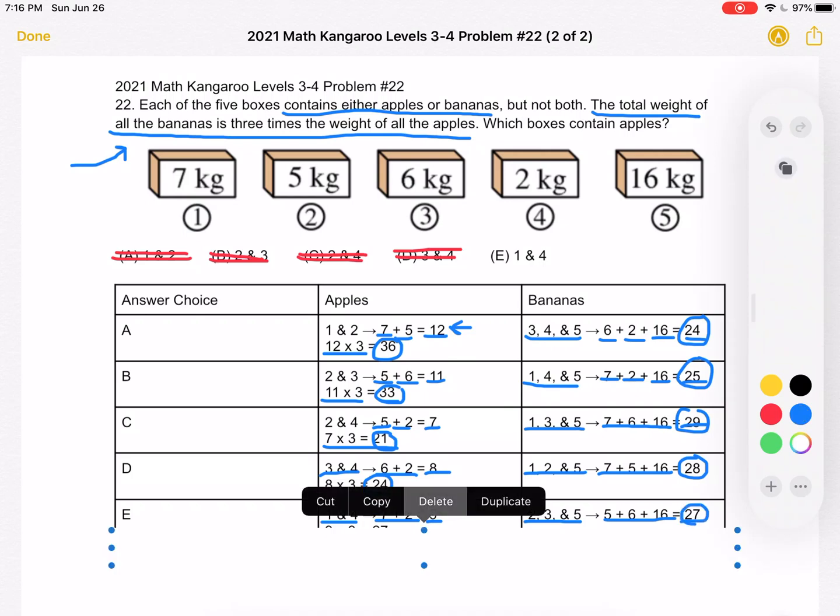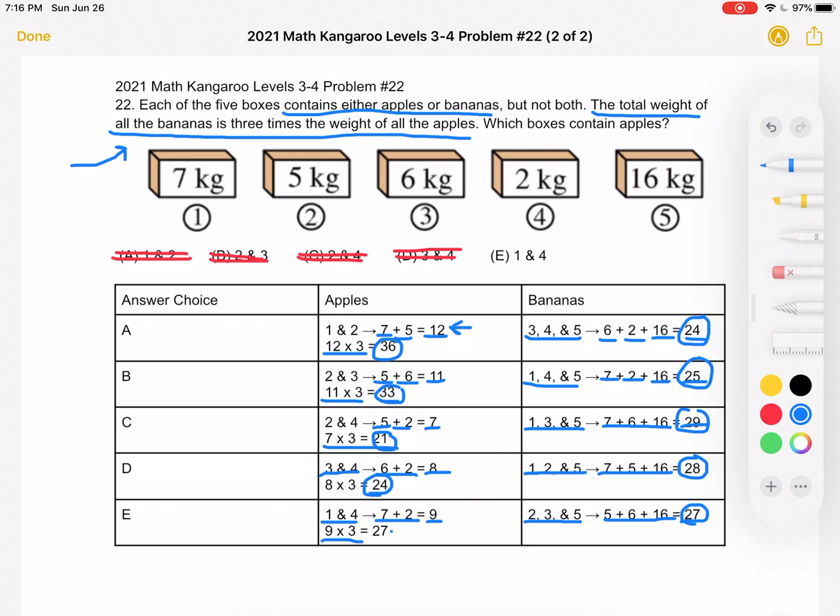The number of apples times 3 would be 9 times 3, which is 27. So 27 is equal to the number of bananas. So both of these, 27 is equal to 27. So answer choice E is, in fact, correct.